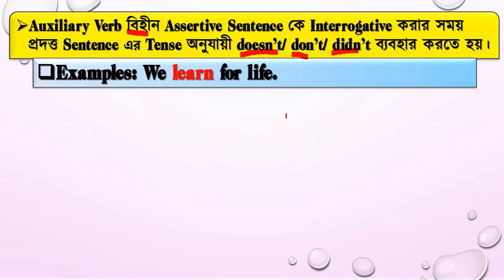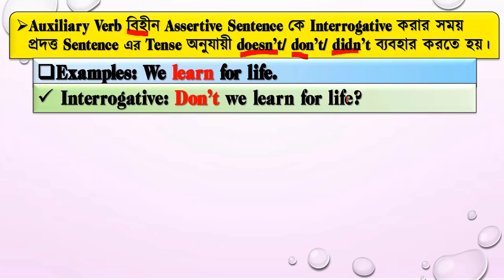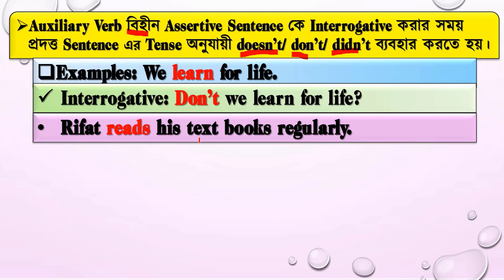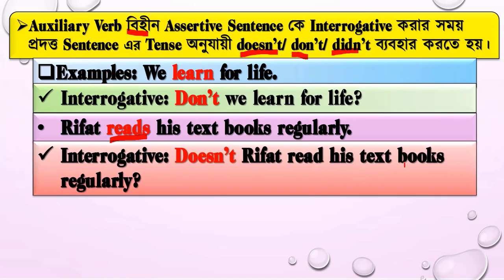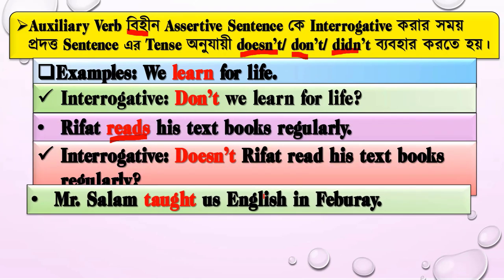Look at the example: 'Rifaad reads his textbooks regularly.' He reads — so we use 'doesn't.' The interrogative form becomes: 'Doesn't Rifaad read his textbooks regularly?'